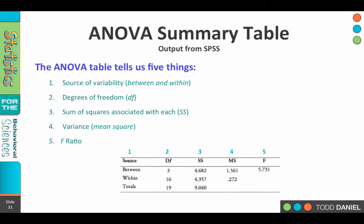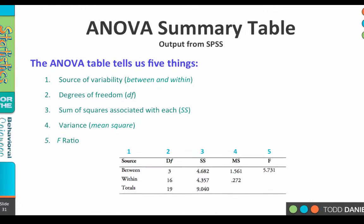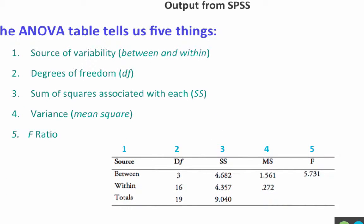The results will be written up in what is called an ANOVA summary table — this is the output we will eventually get from SPSS. The ANOVA table tells us five things. Number one, the source of the variability: between, within, and total.